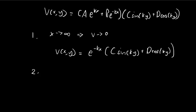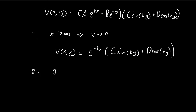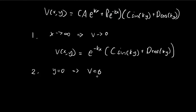The second boundary condition is that when y is equal to zero, the potential is going to be equal to zero — by definition, this bottom plate is grounded. Sine of zero is zero, so that term causes no trouble. But cosine of zero is equal to one, so if we want the potential to be zero, D has to be equal to zero. So we can get rid of the cosine term, because D has to be zero for this condition to be true.